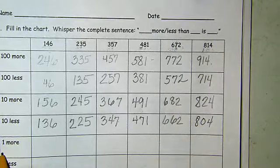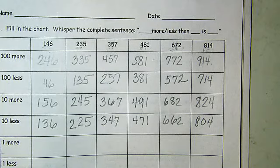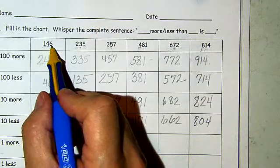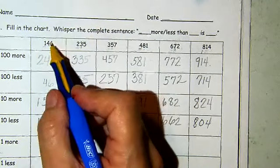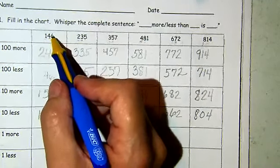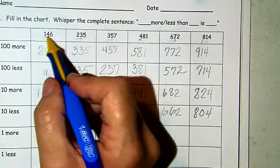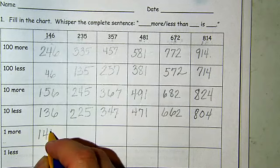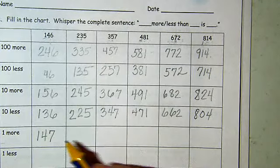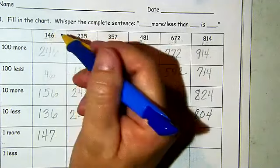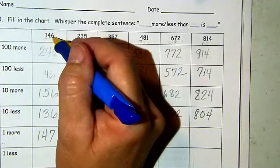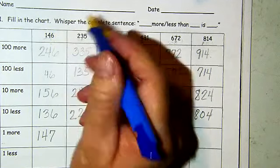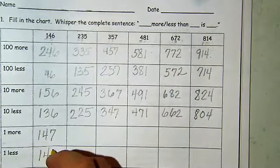So now we're doing one more and one less. Which digit are we changing — the hundreds, the tens, or the ones? Now we're going to look at the ones. So one more than 146 is 147. One less than 146 — take one away from that six and you're going to have a five — 145.